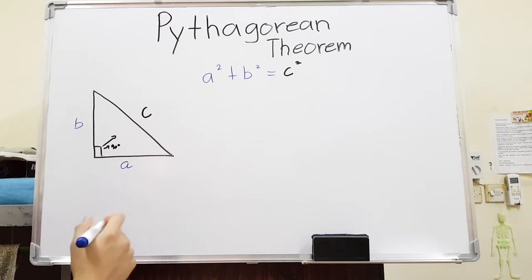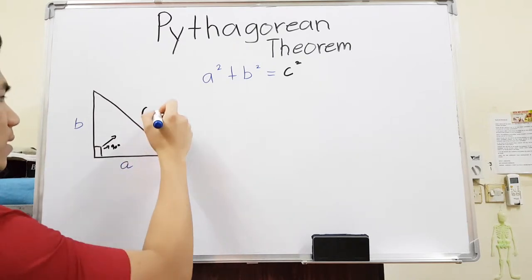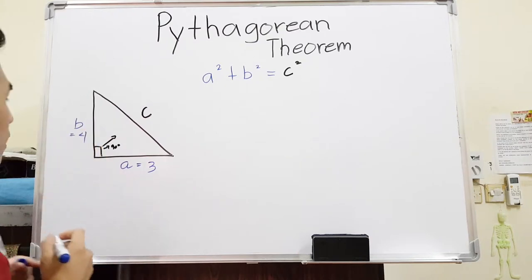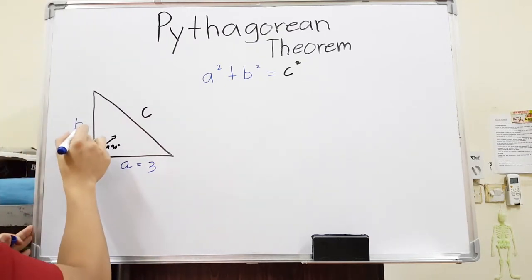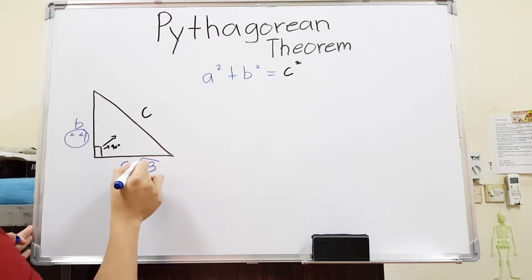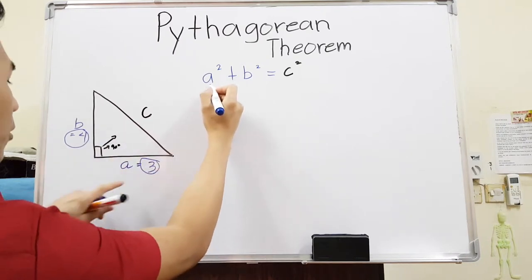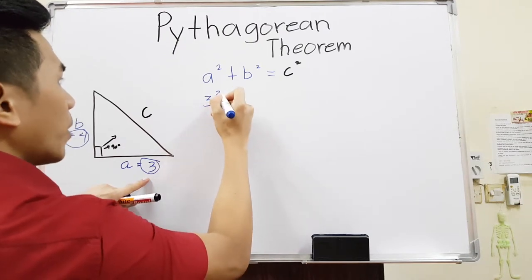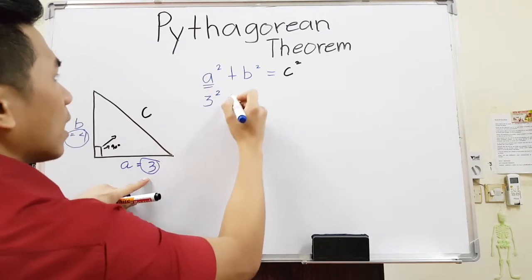Let's have an example. For example, I want to find C. This one is given as 3 and this one is given as 4. All you have to do is replace A and B. What is our A? Our A here is 3. So we'll write 3 squared. We'll just have to replace A. Copy the plus sign.